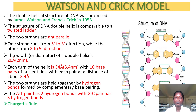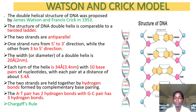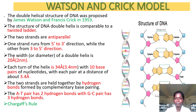The width of the DNA structure is 2 nanometers, and each turn of the helix is 3.4 nanometers, containing 10 base pairs. The two nucleotides are complementary to each other. The Watson-Crick model also incorporates Chargaff's rule, which states that nitrogenous bases are complementary — the number of purines always equals the number of pyrimidines. Adenine binds to thymine with a double bond and guanine binds to cytosine with a triple bond. The sugars and phosphates form the backbone of the DNA structure.